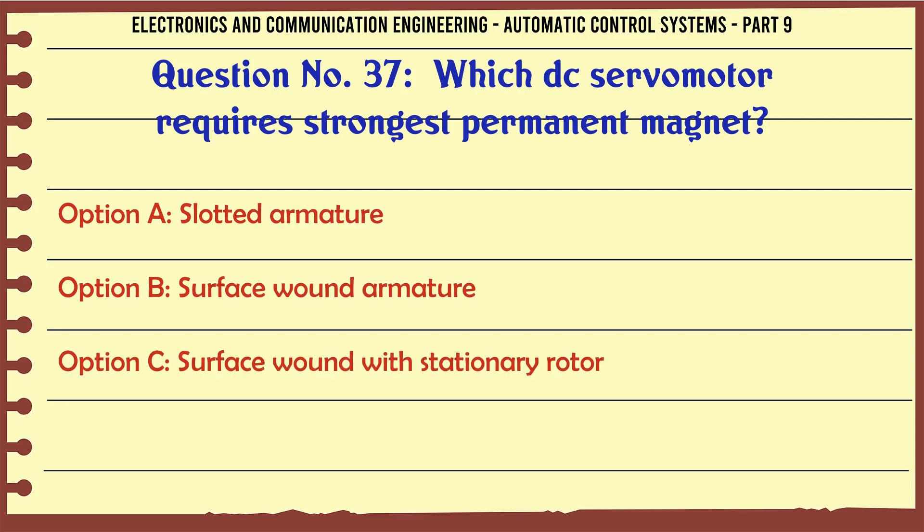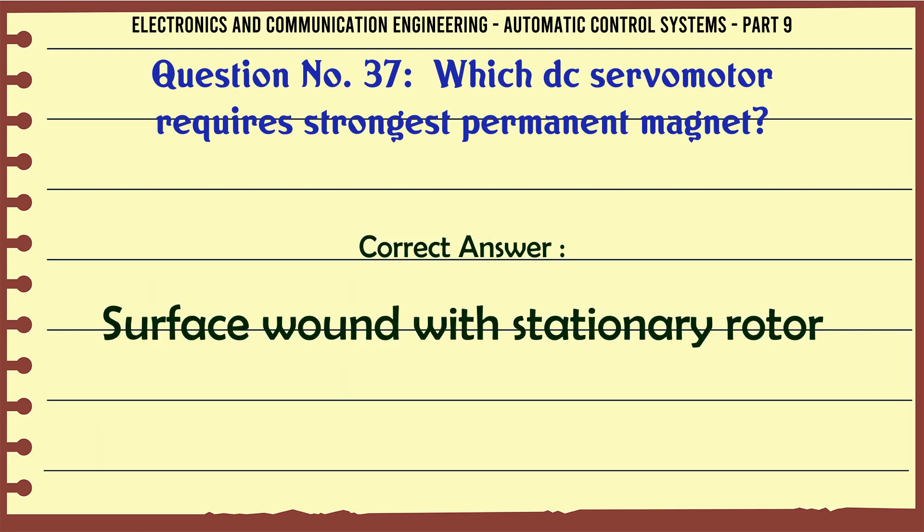Which DC servomotor requires the strongest permanent magnet? A. Slotted armature, B. Surface wound armature, C. Surface wound with stationary rotor, D. Either A or B. The correct answer is: Surface wound with stationary rotor.